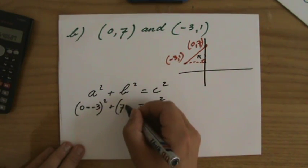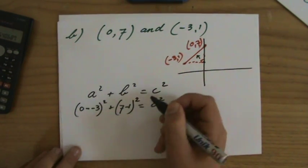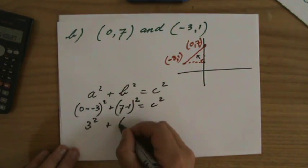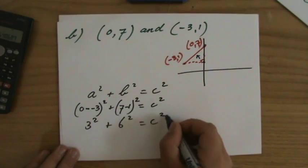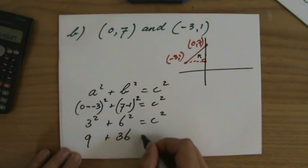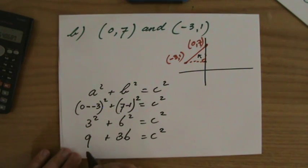So that is 3 squared plus 6 squared equals c squared. Three times three is nine, six times six is 36, equals c squared. Nine plus 36, 45 equals c squared.